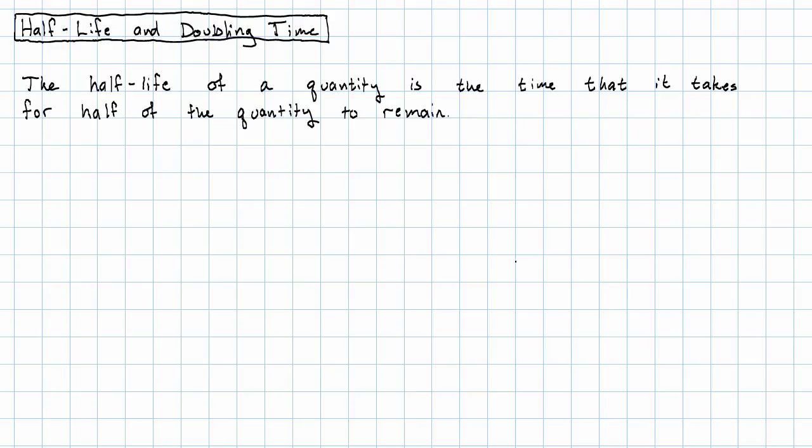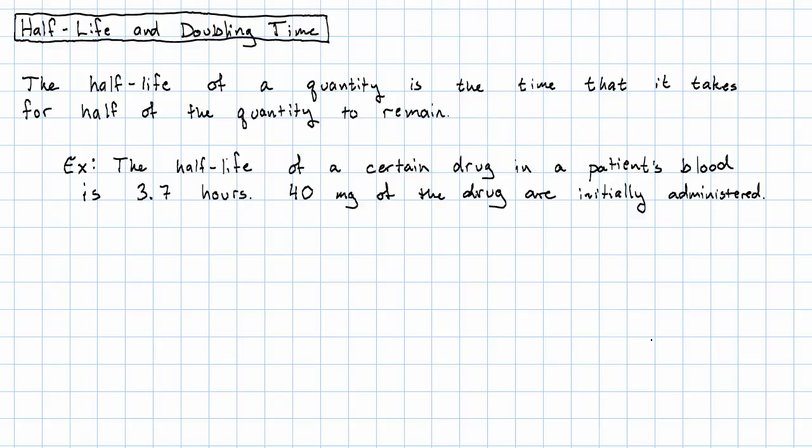So how would we use that? We might say something like: suppose the half-life of a certain drug in a patient's blood is 3.7 hours, and 40 milligrams of the drug are initially administered.